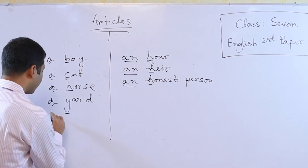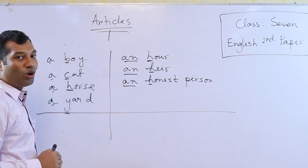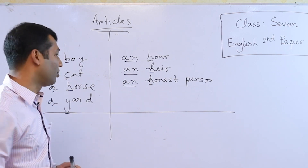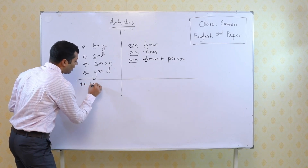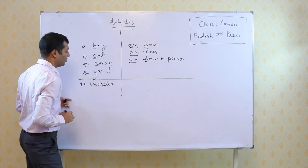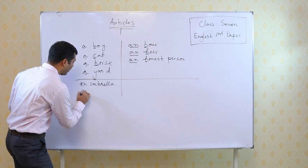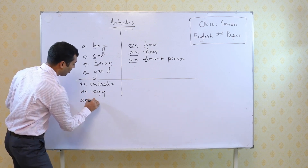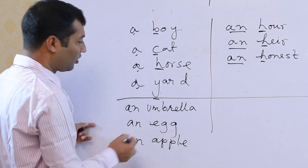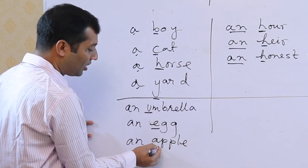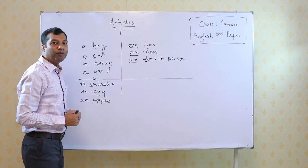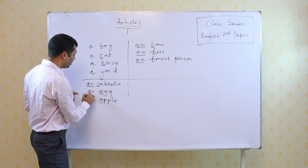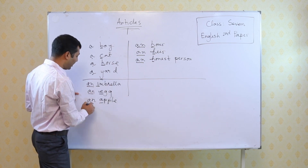Now come to the next point. As I said, we use 'an' before a vowel sound. For example: an umbrella, an egg, an apple. Look at these words — umbrella, egg, apple — the initial sound is a vowel sound. So as they are vowels, we are using 'an' before them: an umbrella, an egg, an apple.